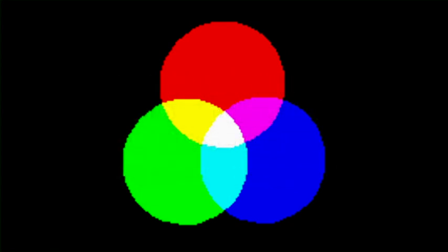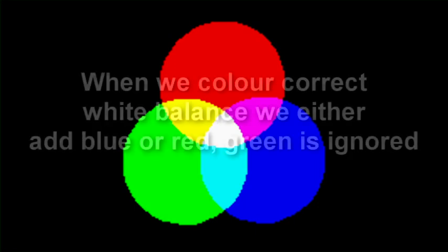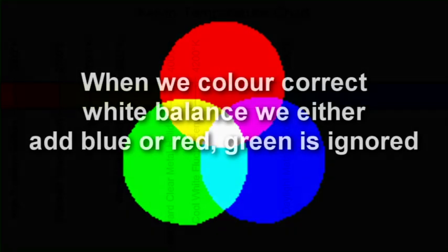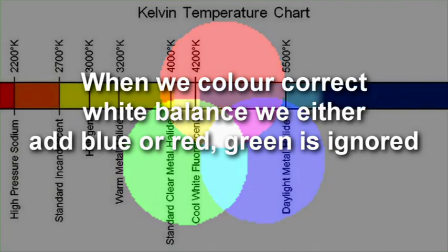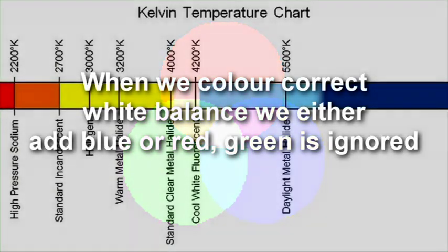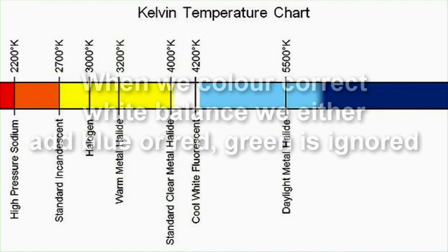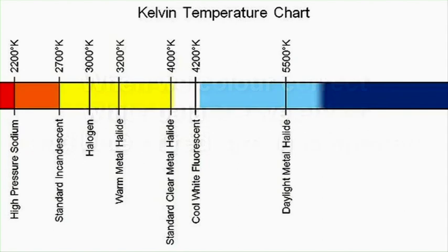The white balance is the amount of blue light to red light emitted by any light source. Green light is ignored as it is in the middle of the spectrum. This is why, when we adjust the white balance, we either add red or blue to the photo.